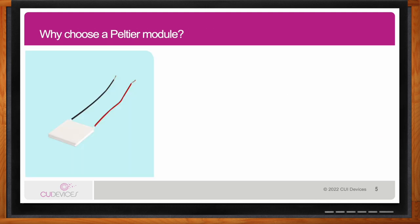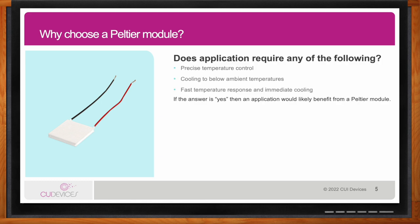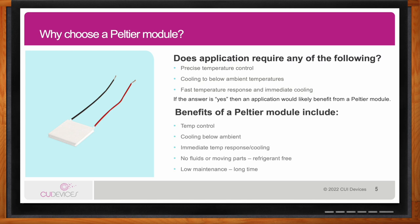One of the things to figure out if you need a Peltier module is to ask yourself if your application requires precise temperature control, cooling below ambient temperatures, or faster, immediate temperature response. If the answer is yes to any of those things, your application would likely benefit from a Peltier. The benefits of Peltiers are exactly that: precise temperature control, cooling below ambient temperatures, and immediate temperature response. They are also solid-state devices with no fluids or moving parts, making them low maintenance with a long lifespan.